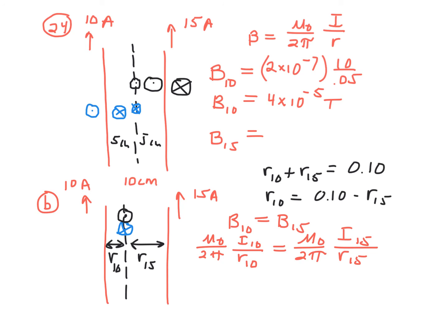We can take a shortcut — mu zero over 2 pi cancels on both sides. All we have is I sub 10 over R sub 10 equals I sub 15 over R sub 15. Plugging in: 10 amps over (0.10 minus R sub 15) equals 15 amps over R sub 15. You can just cross-multiply and solve for R sub 15 — that tells you how far you are from the 15-amp wire. Subtract from 10 centimeters to get R sub 10, the distance from the 10-amp wire. That's the location where the magnetic fields cancel and you get a net zero magnetic field.